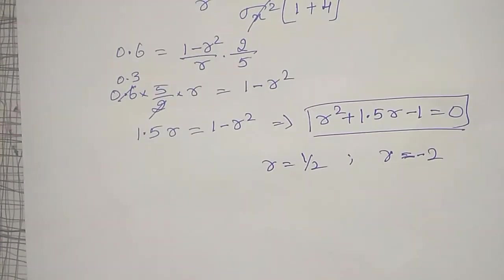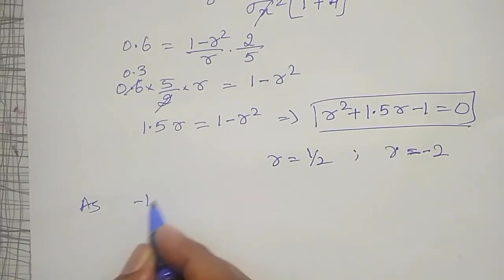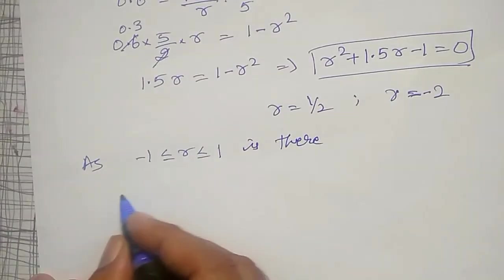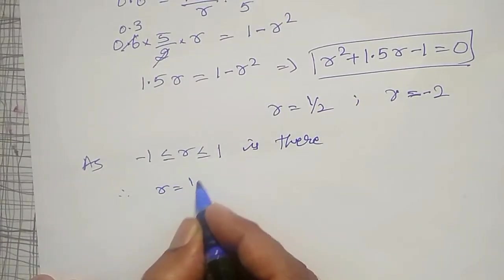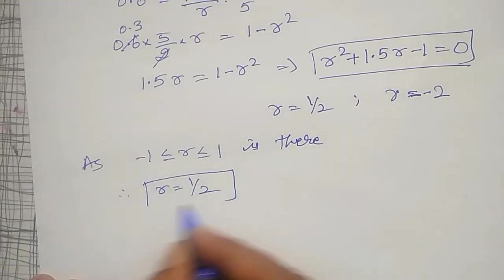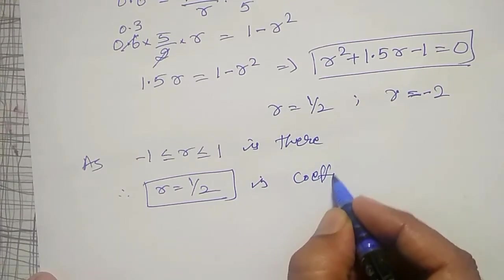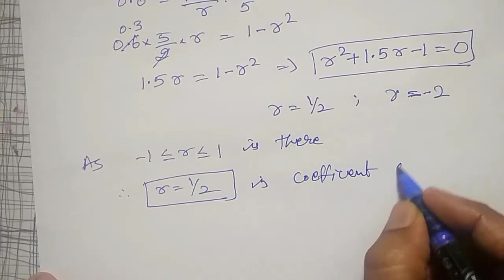But this is neglected, because r is lying as minus 1 less than or equal to r less than or equal to 1. Therefore, r must be equal to 1 by 2 only. Here is the coefficient of correlation.